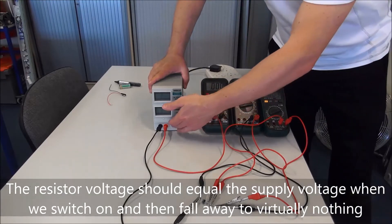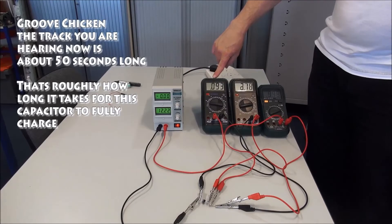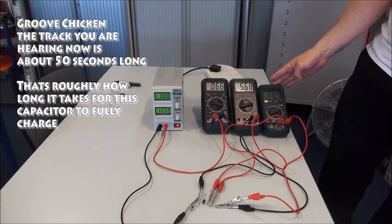Let's switch on the power supply. We start with the high current, which is falling. The capacitor voltage is building and the resistor voltage is falling.